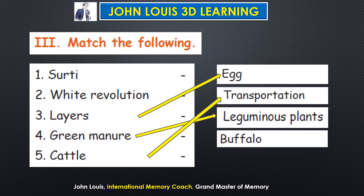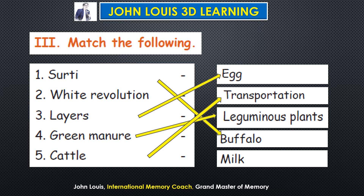Continuing match the following: buffalo — Surthi is a type of buffalo, seven types of buffalo. White revolution is matched with milk. So: layers → egg, green manure → leguminous plants, cattle → transportation, white revolution → milk, buffalo → Surthi.